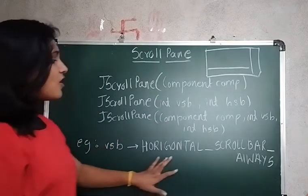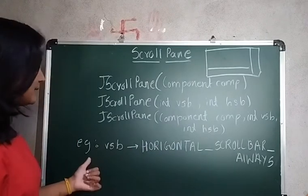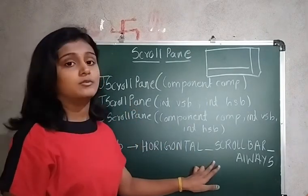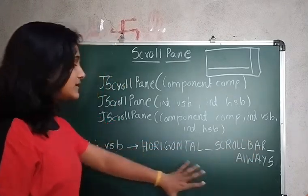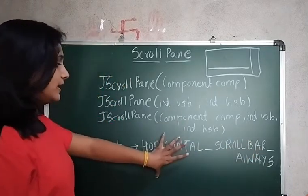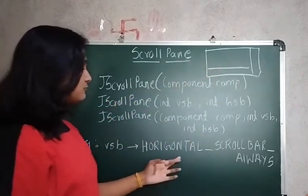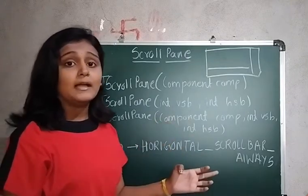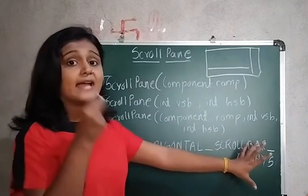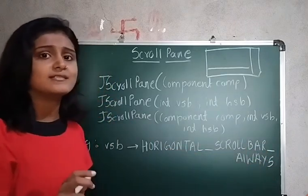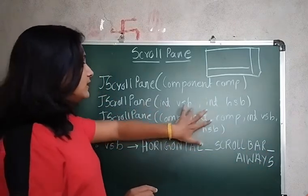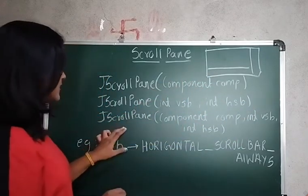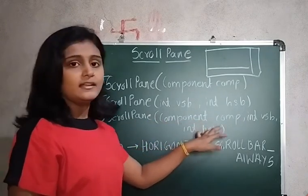As per your requirement you can pass constants such as HORIZONTAL_SCROLLBAR_ALWAYS — meaning the horizontal scrollbar will always appear — or VERTICAL_SCROLLBAR_ALWAYS, or VERTICAL_SCROLLBAR_AS_NEEDED, or HORIZONTAL_SCROLLBAR_AS_NEEDED. These are the four constants you can pass for the integer vertical and horizontal scrollbar parameters.